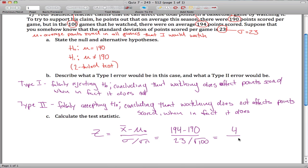So this is 4 divided by, whoa, don't drop your calculator. 4 divided by 2.3. 23, square root of 100 is 10, 23 over 10 is 2.3. So 4 divided by 2.3 is 1.74, if we round it to two decimal places.